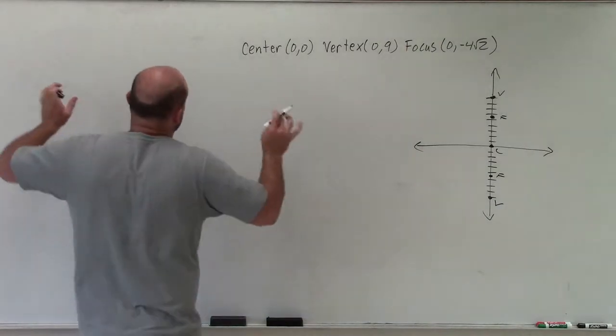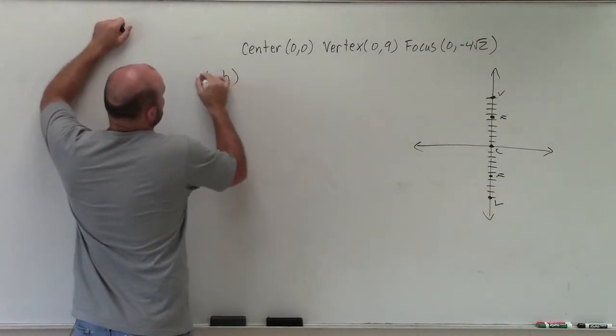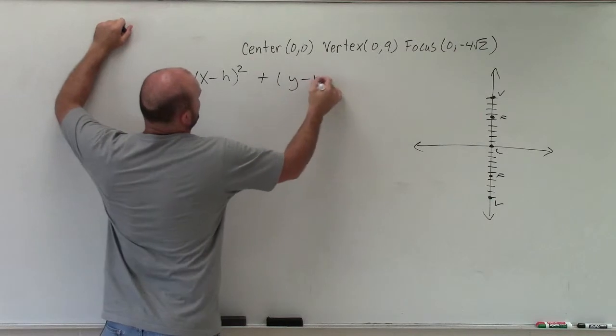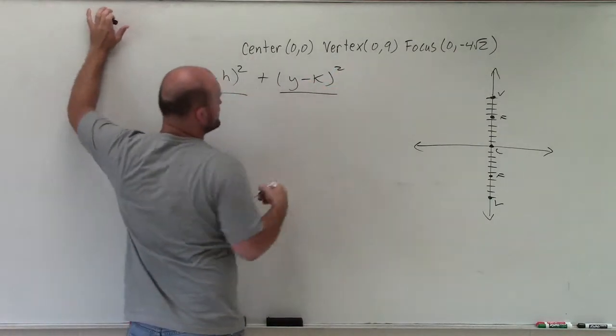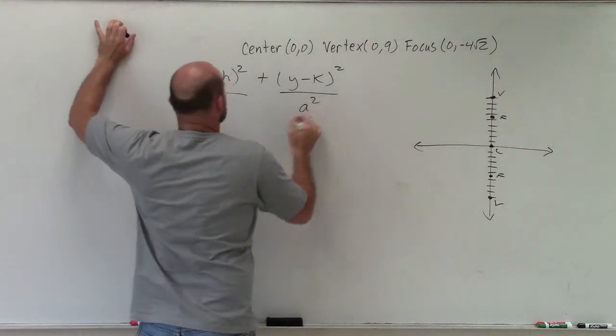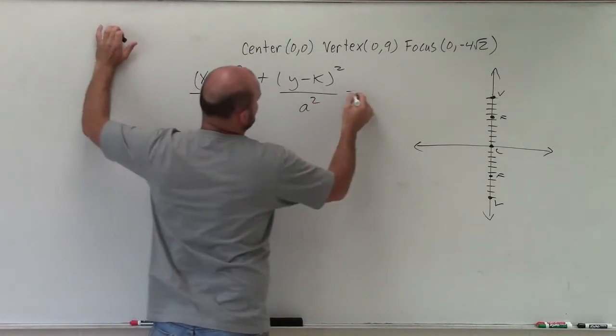So therefore, now that I know my major axis is vertical, I can correctly write the equation of my ellipse. And the equation of my ellipse, whenever you have a major axis that's vertical, your a² is going to be under your y, and your b² is under your x.